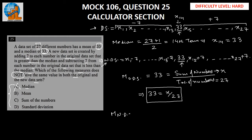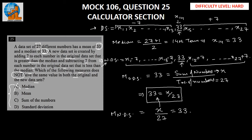Now let's find the mean for the new data set. In the new data set, for the first 13 terms we are subtracting 7 from each, and for the last 13 terms we are adding 7. This means the total sum will remain x, because subtracting 7 from 13 terms and adding 7 to 13 terms makes no net difference. The total number of numbers is still 27, so x divided by 27 still equals 33. The mean is also not changing, so we can eliminate option B.